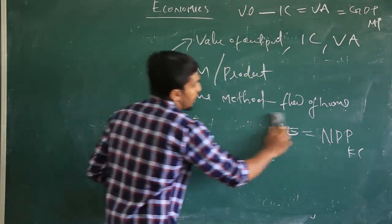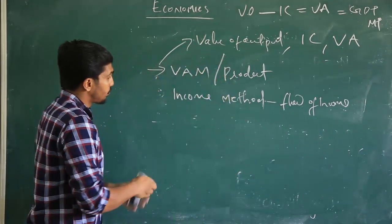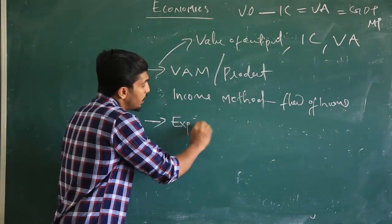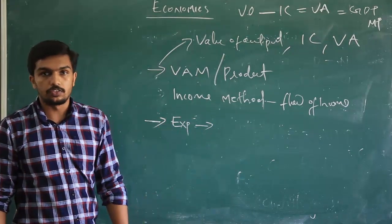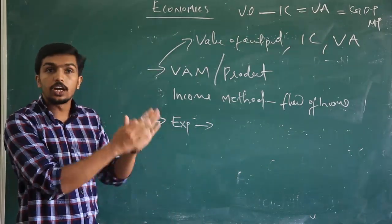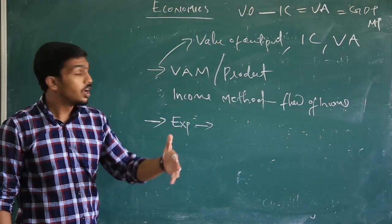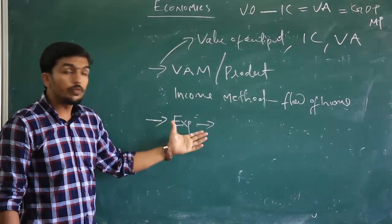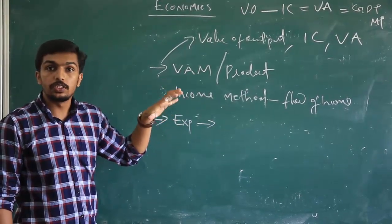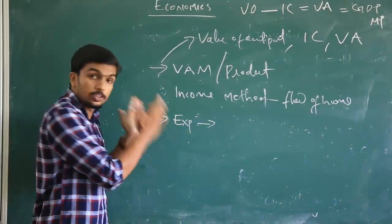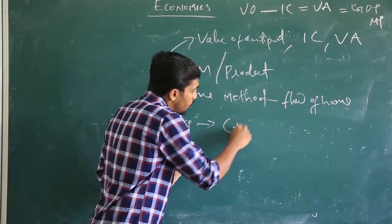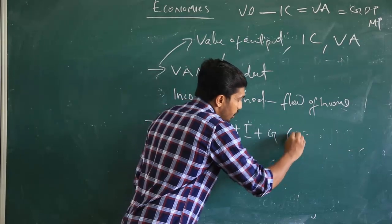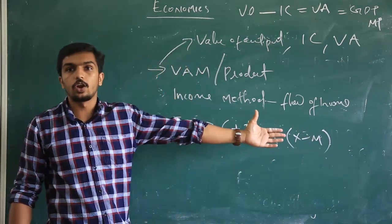The third method is the Expenditure Method. This method is based on the flow of expenditure in an economic system. Expenditure includes consumption expenditure, investment expenditure, and other development expenditure. Here we analyze the aggregate situation of an economy on the basis of the expenditure side. An economic system is mainly defined as C plus I plus G plus X minus M. This is the shortest definition of a four-sector model economy.